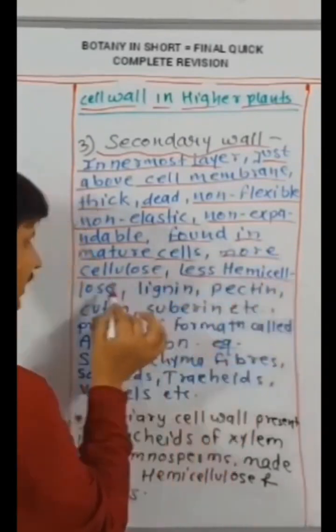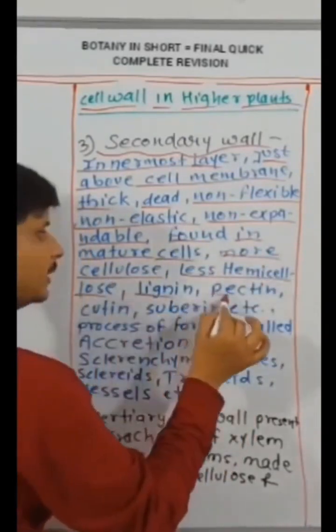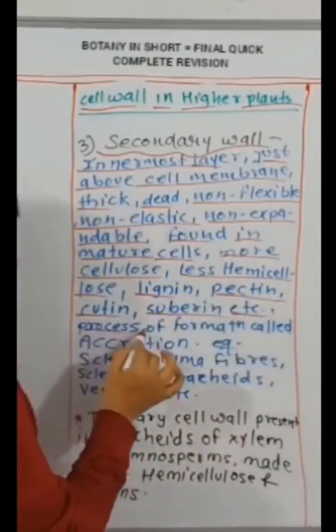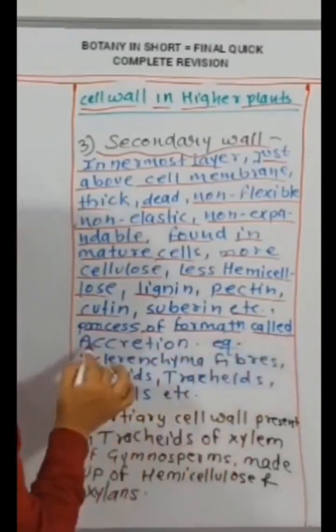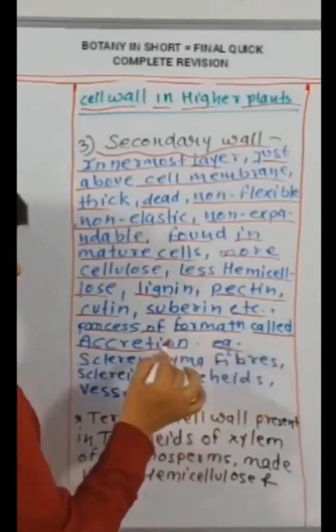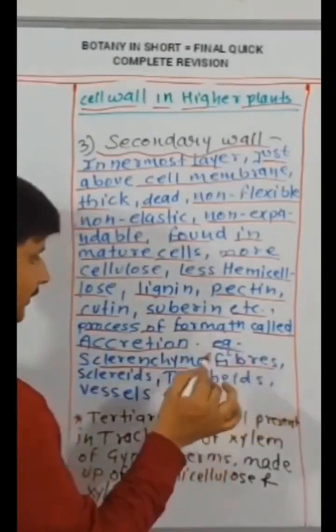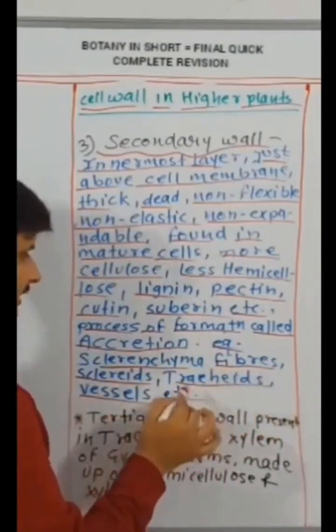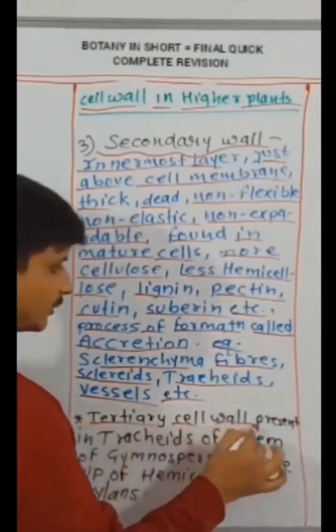More cellulose, less hemicellulose. Lignin, pectin, cutin, suberine, etc. Process of formation called accretion. For example, sclerenchyma fibers, scleroids, tracheids, vessels, etc.